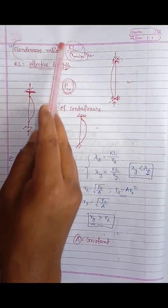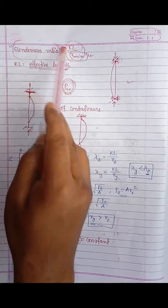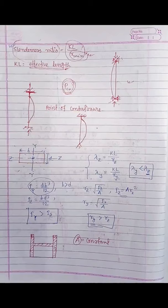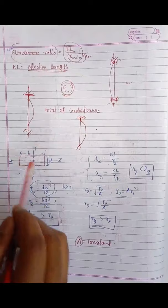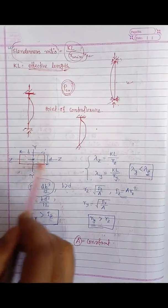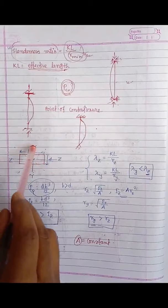The slenderness ratio is equal to effective length divided by radius of gyration. The effective length depends on the end restraint, that is the support condition on both ends of the compression member. The radius of gyration depends on the material distribution along the directions. For a rectangular section with z-axis and y-axis, the radius of gyration depends on material distribution about these two axes.